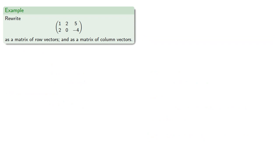We can rewrite a matrix as a matrix of row vectors and as a matrix of column vectors. The row vectors are easy. We take our first vector to be the first row, and our second vector to be the second row.